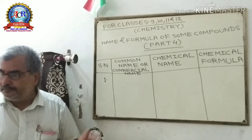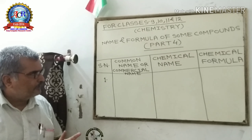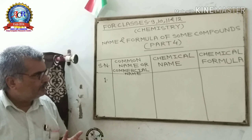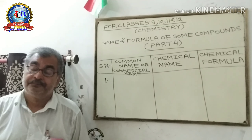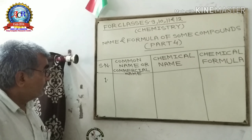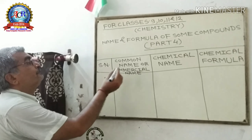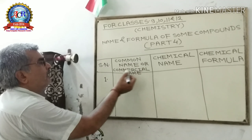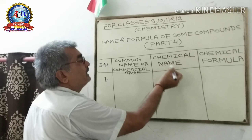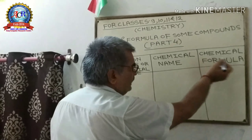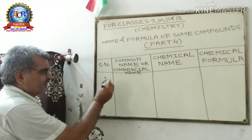Write down a table like this. Here, serial number, and here common name or commercial name, here chemical name, and here chemical formula.